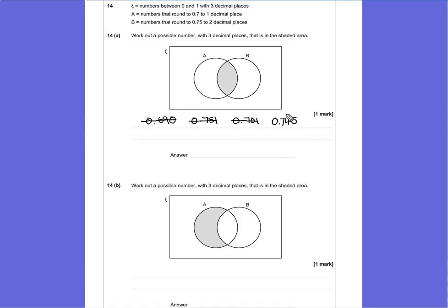If we round this to 1 decimal place, then it was 0.7. But if we now include the second number, that 4 gets rounded up because of the 5 and becomes 0.75, meaning 0.745 is a valid option for that gray area of the two circles. We could have chosen any value up to 0.749, and that still would have succeeded at matching both criteria.